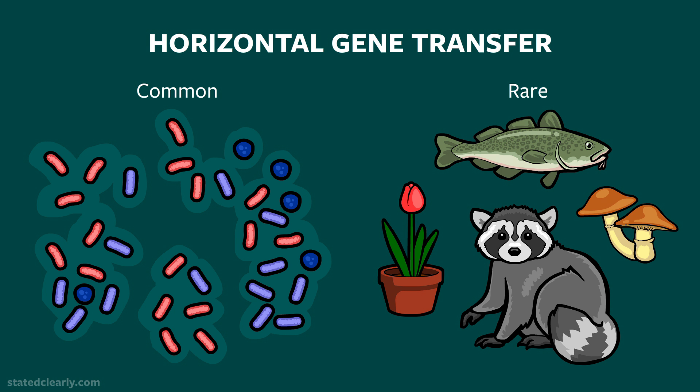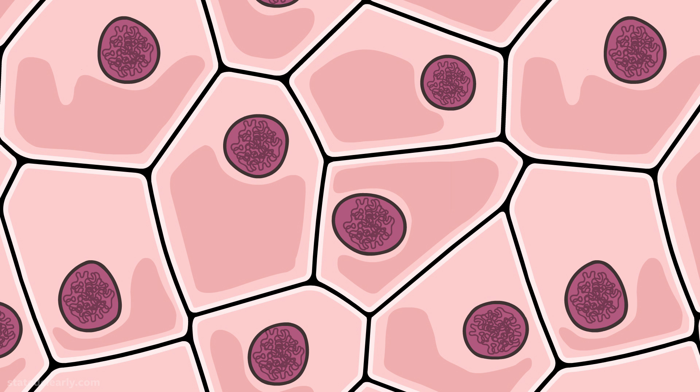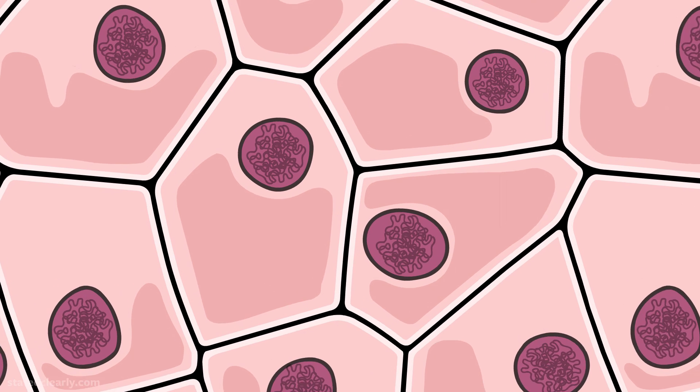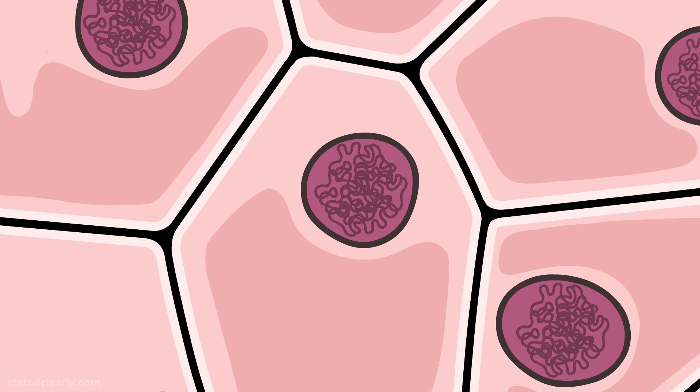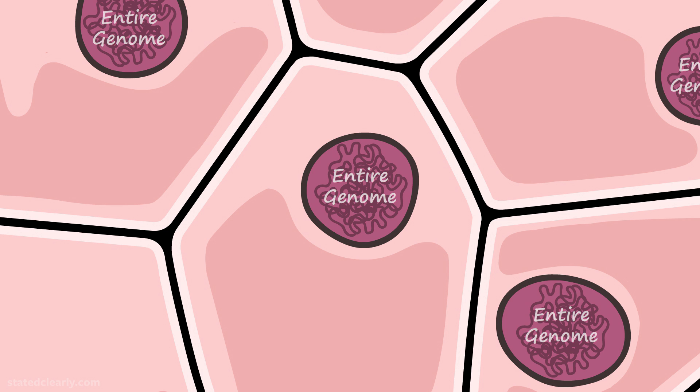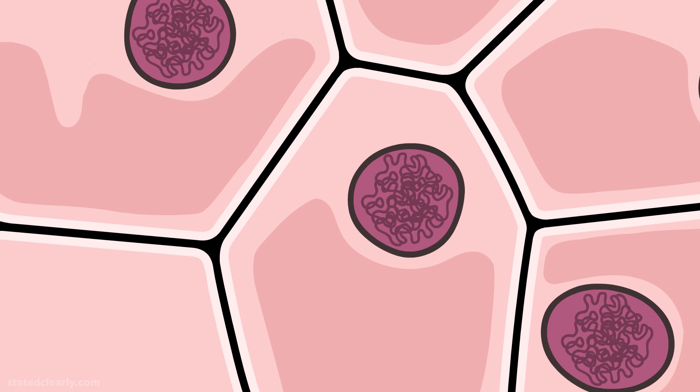Horizontal gene transfer is common in bacteria, but for most plants and animals, complete horizontal gene transfer appears to be very rare. With a few exceptions, every cell in your body contains its own full copy of your genes — your entire genome. The same is true for other multi-celled animals and plants.